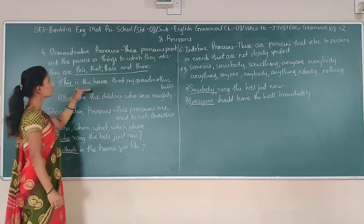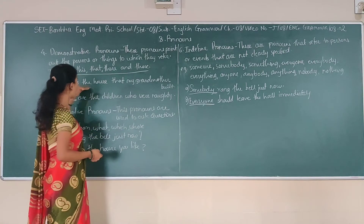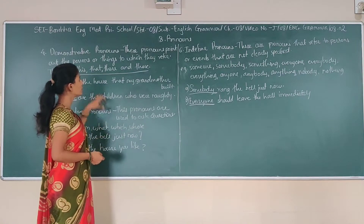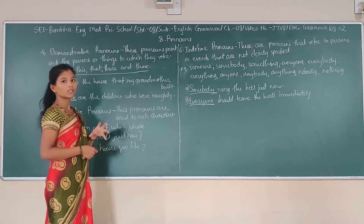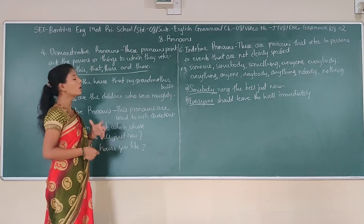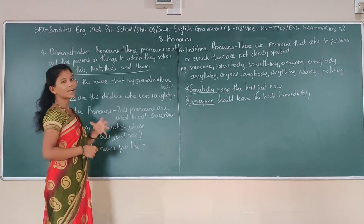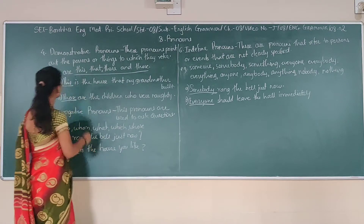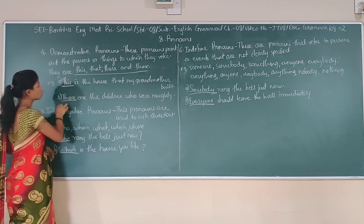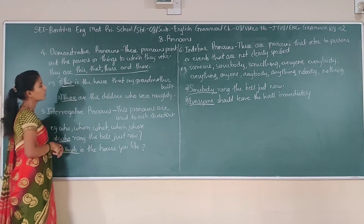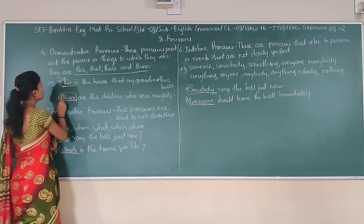See the example: 'This is the house that my grandfather built.' Here 'this' is referring — it is just referring to the house. This is the grandfather's house, and that is why 'this' is used here as a demonstrative pronoun. Similarly, 'those are the children who were not there' — so 'those' is also a demonstrative pronoun.